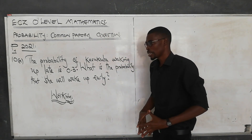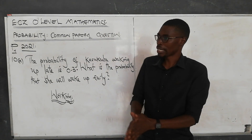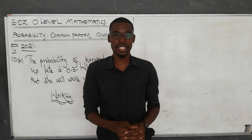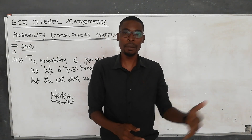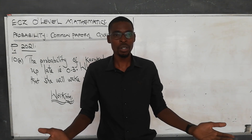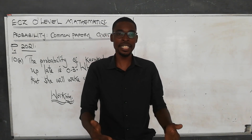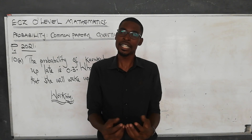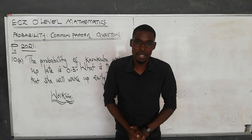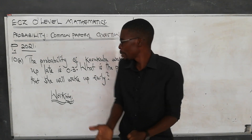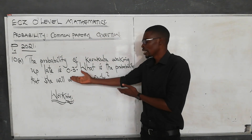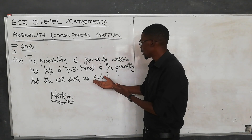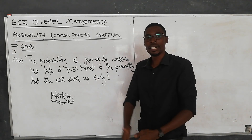What am I talking about here with regards to this question? When you know the probability of an event happening, and there are only two possibilities — either it happening or not — then you can definitely get the probability of that event not happening. In this case, you know that there are two possibilities: Kaskulu is going to wake up either early or late.